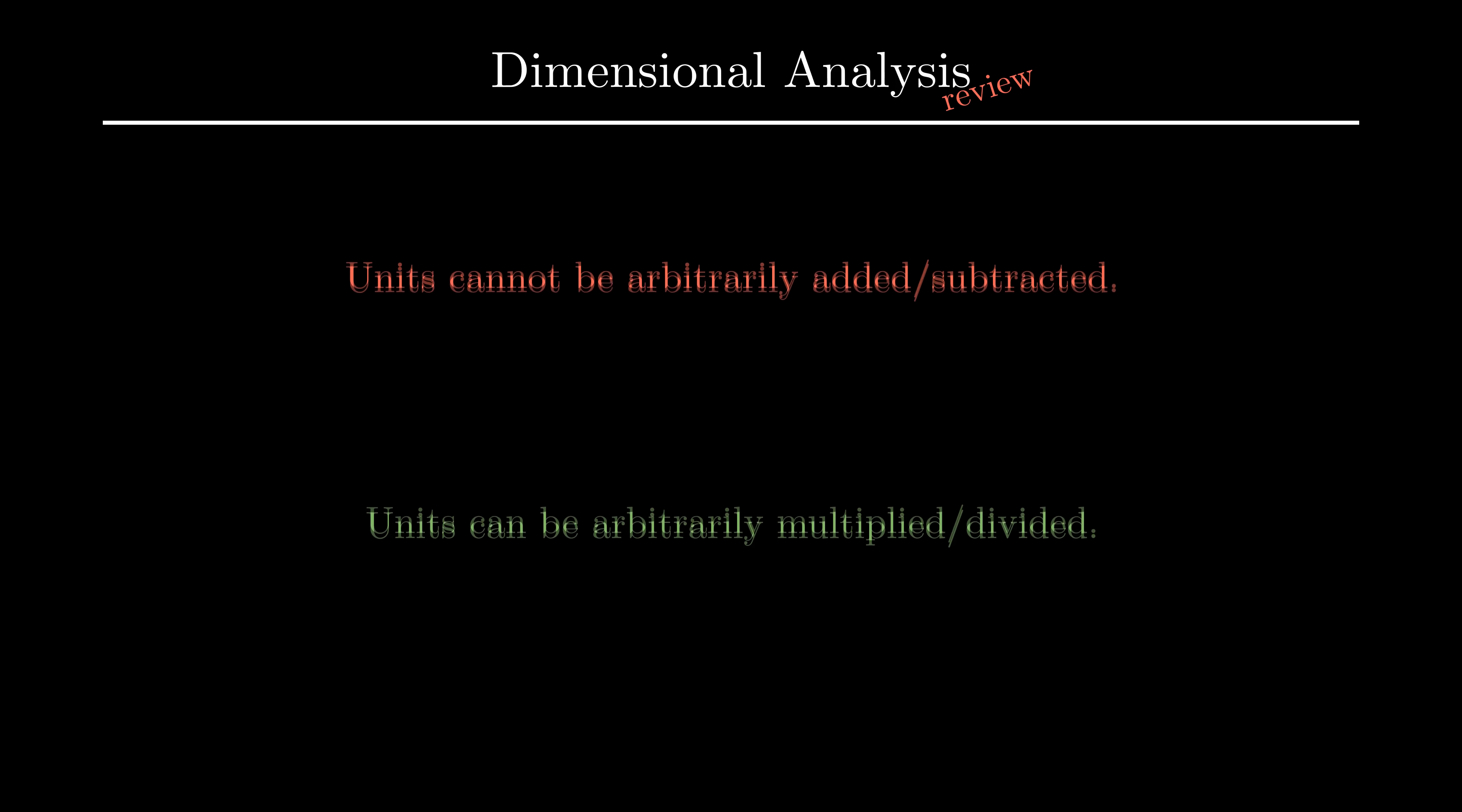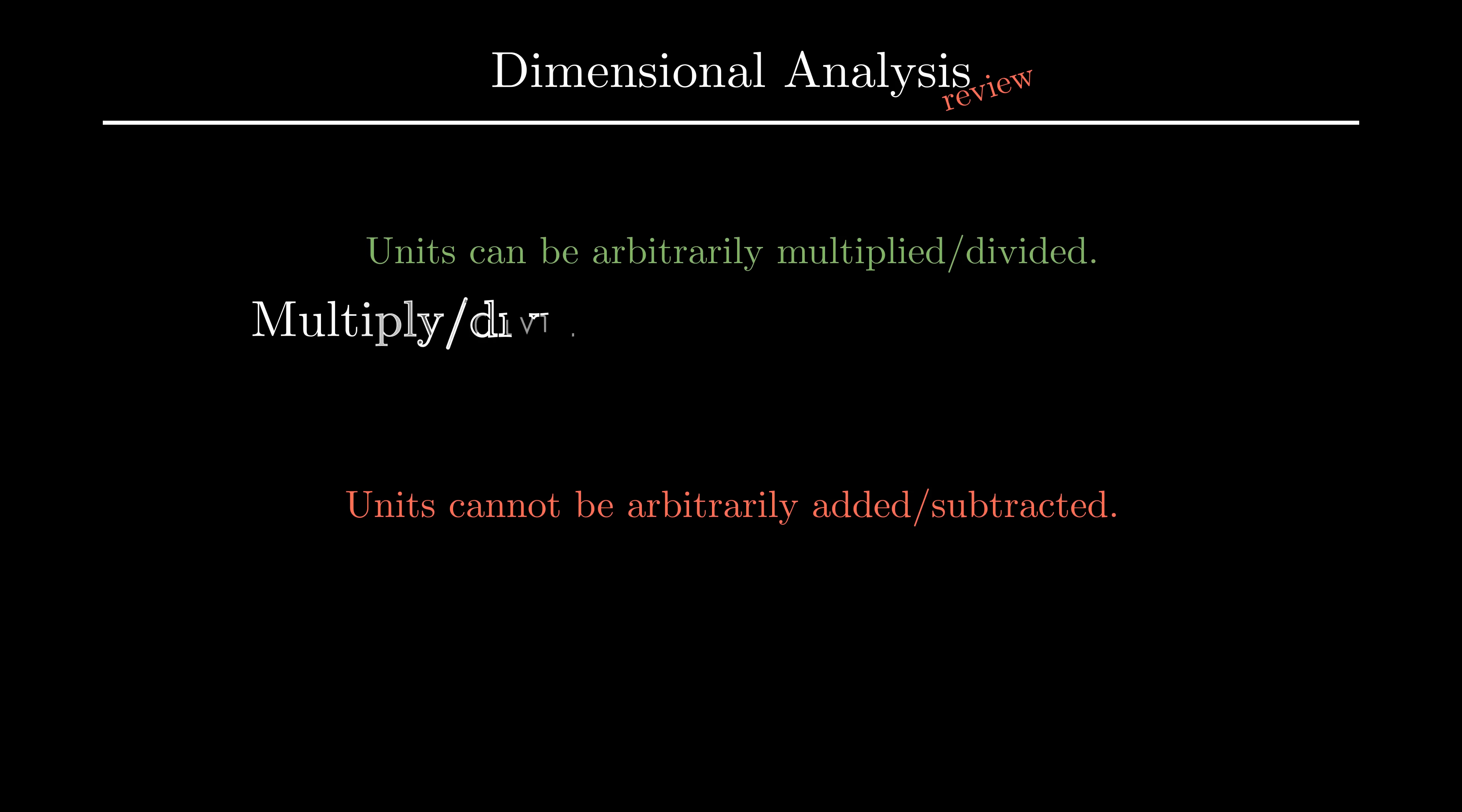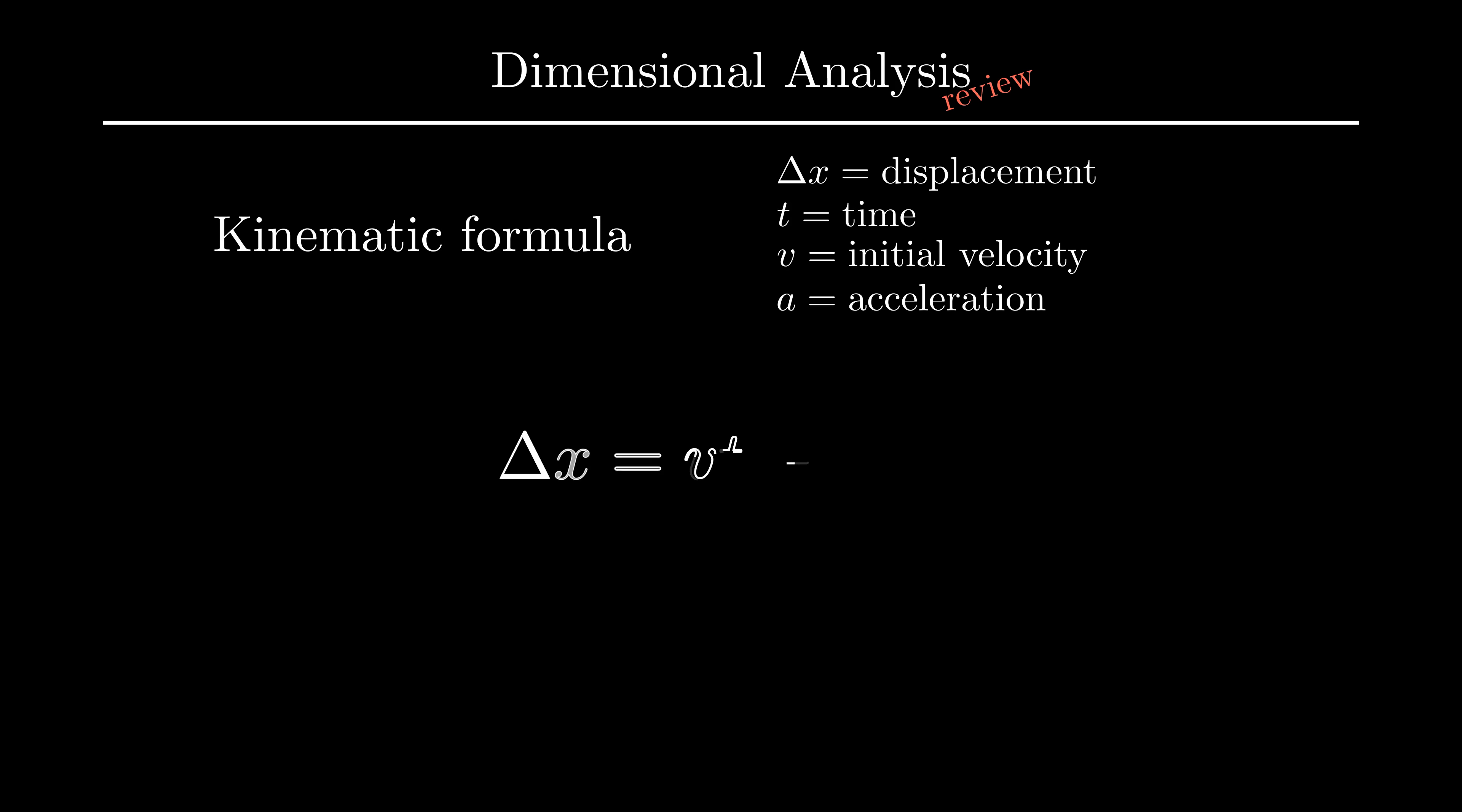This explains why multiplication comes before addition. We need to first multiply each term so that the units line up, and only then can we add everything up. Take, for example, this formula for an object's position given its constant acceleration and initial speed. If we write out each value in terms of just the units, we can see that the units need to first align before we can add the lengths to arrive at an answer.